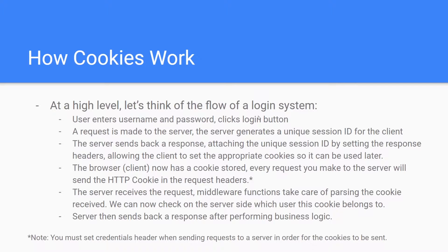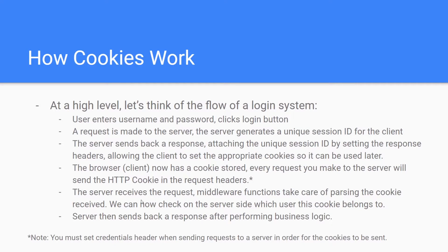Every single time you make a request to the server with that session ID cookie, it's going to uniquely identify which user and which session made that request — so we know who is making the request. Once the request is made, the server receives it, middleware functions will parse the cookie received, and on the server side we can check which user this cookie belongs to — for example, check the database to see what session ID this correlates to — and then perform whatever business logic we need for that user.